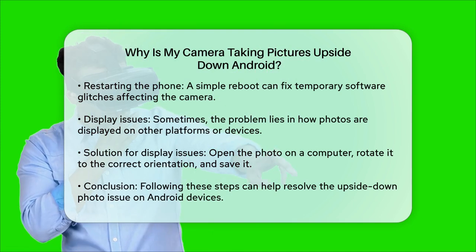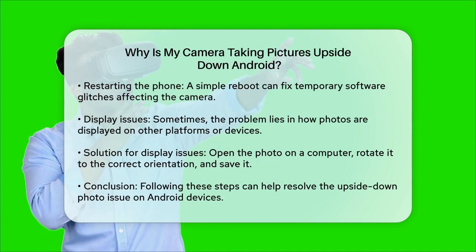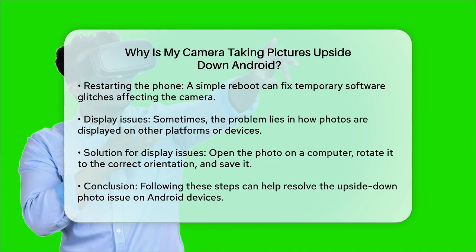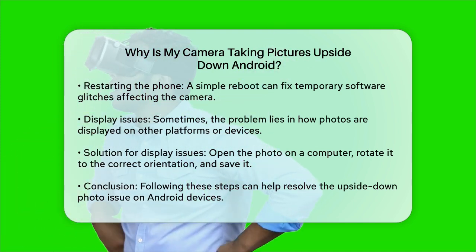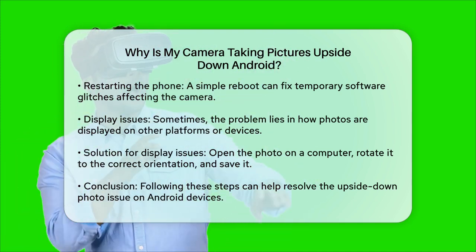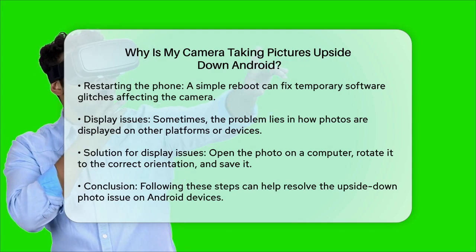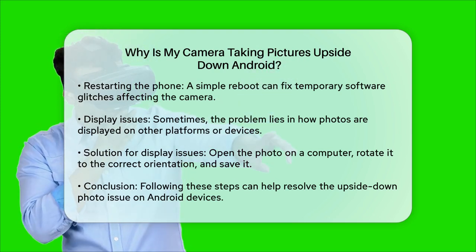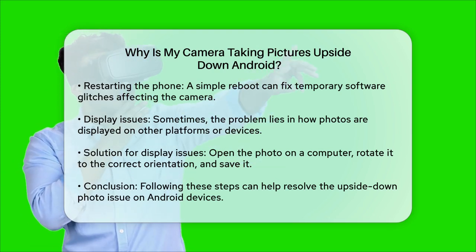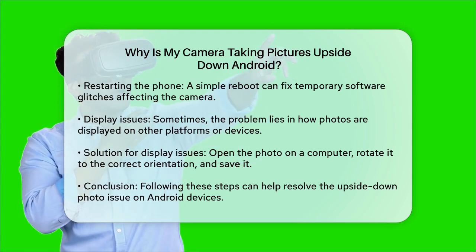By following these steps, you should be able to fix the issue of your Android camera taking upside down pictures. Remember, it is often just a matter of clearing out some temporary data or updating your software to get everything working smoothly again.